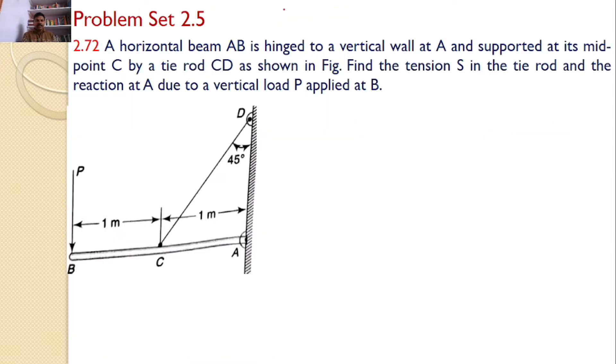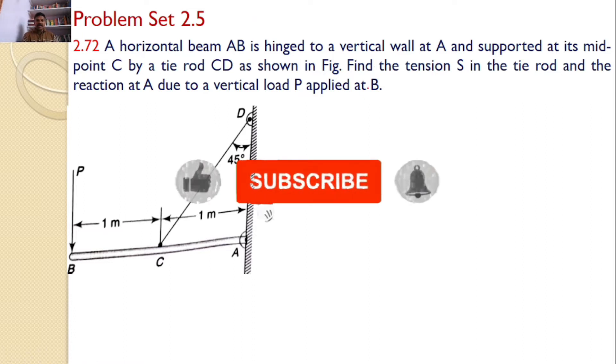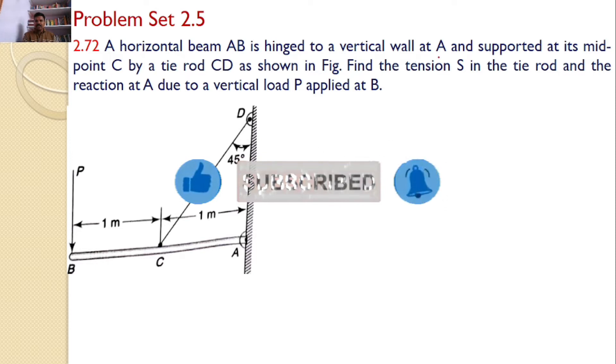In this tutorial, we will discuss problem set 2.5 and problem number 2.72. A horizontal beam AB is hinged to a vertical wall at A and supported at its midpoint C by a tie rod CD as shown in the figure. Find the tension S in the tie rod and the reaction at A due to vertical load P applied at B.